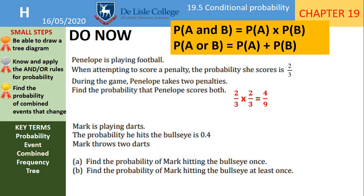Next question. Mark is playing darts. The probability he hits the bullseye is 0.4. Mark throws two darts. Find the probability of Mark hitting the bullseye once. He can do this in two scenarios: he can not hit the bullseye and hit the bullseye, or he can hit the bullseye and not hit the bullseye. Since we are given the probability as a decimal, we'll work in decimals. So 0.4 multiplied by 0.6 gives us 0.24.